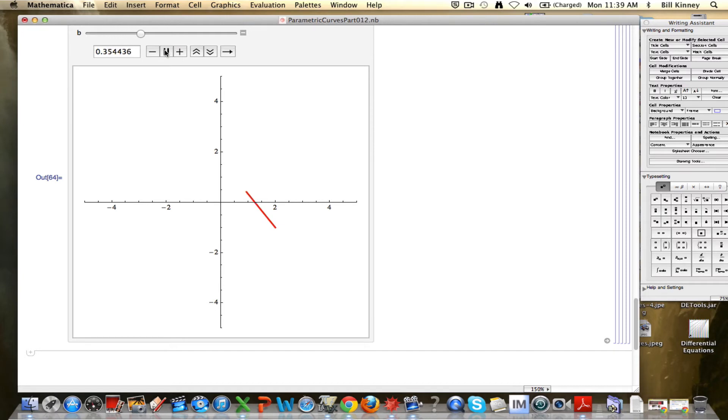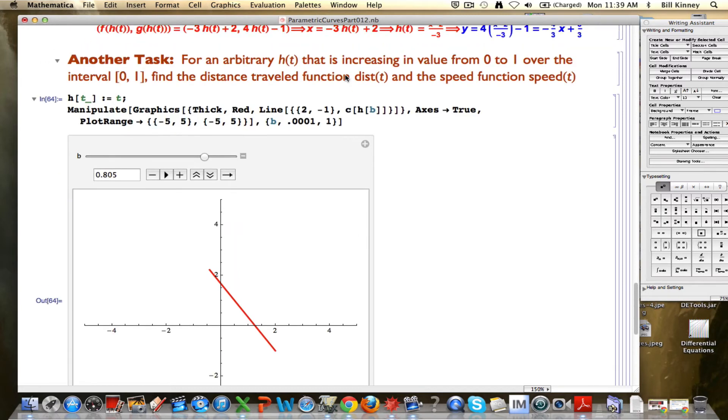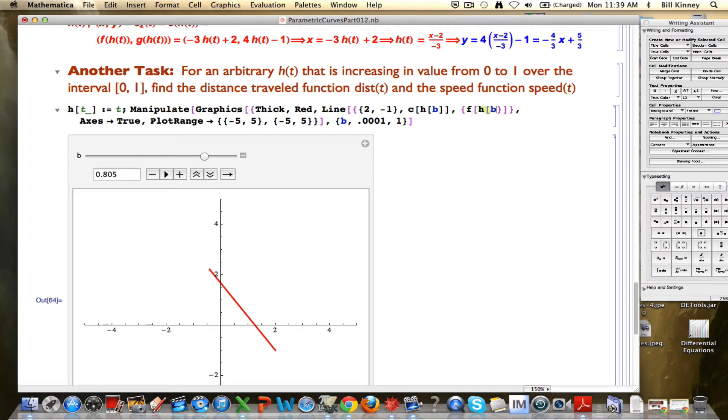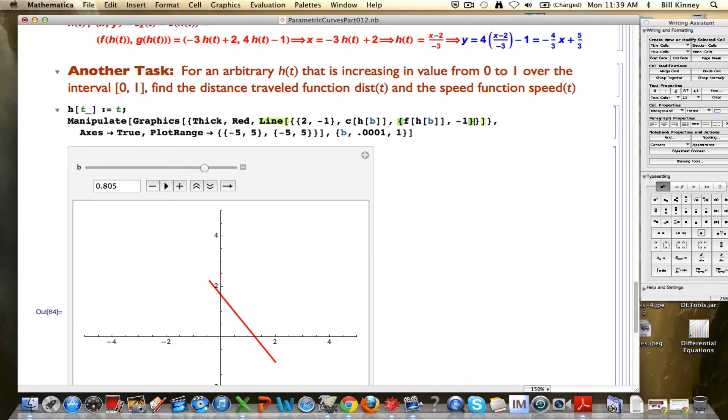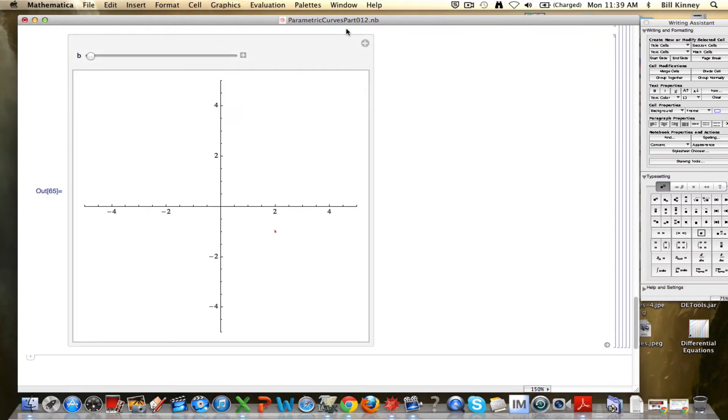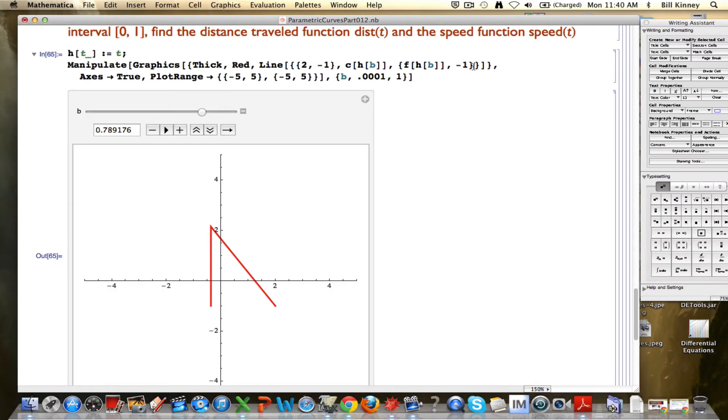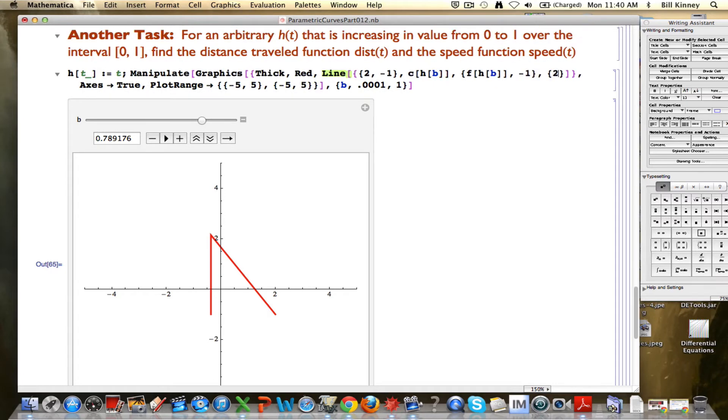The next point in the triangle is going to be where the person is. Where is the person? The person is at the point c of h of b. So, so far, what I've got is going to plot that line segment. Let's add some options in here, axes, true, and plot range. We'll go from negative 5 to 5 in both directions. This should graph a moving line as we've plotted many times already, actually. This is the motion of the person. That's the parametric curve. But now I want to make a triangle out of this, a right triangle.